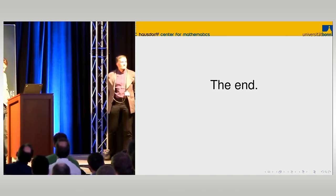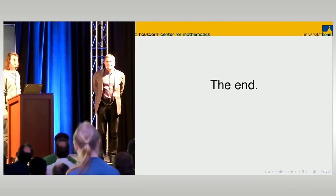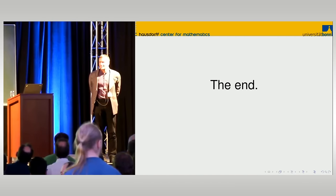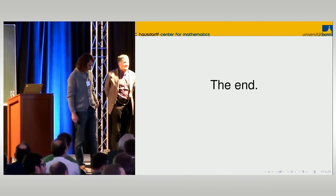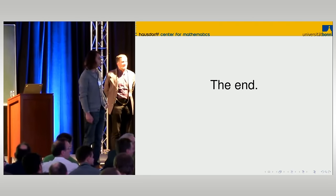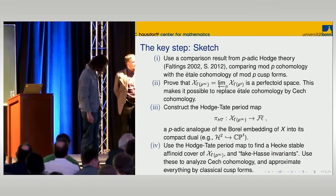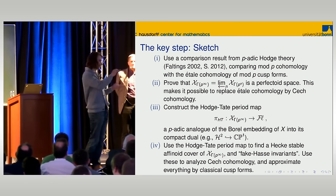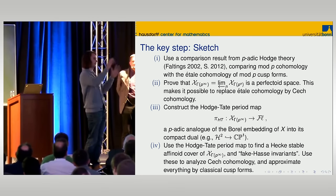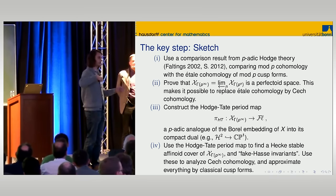Thank you very much for this lecture. Can you roughly explain where the symmetry comes in and why you need it? You need a space with a high group of symmetries because you want to take quotients by arithmetic groups — you need a space where the arithmetic group can act, and so you need a highly symmetric space to begin with.